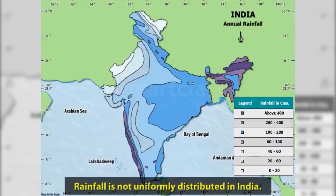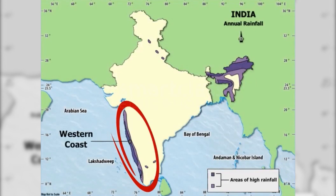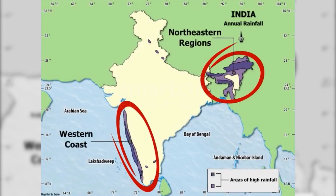Rainfall is not uniformly distributed in India. Parts of the western coast and northeastern India receive over 400 centimetres of rainfall annually.